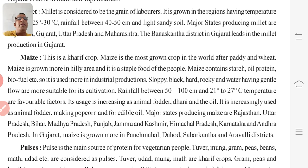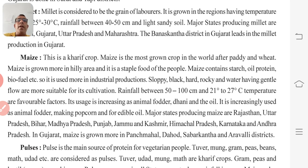Major states producing maize are Rajasthan, Uttar Pradesh, Bihar, Madhya Pradesh, Punjab, Jammu and Kashmir, Himachal Pradesh, Karnataka, and Andhra Pradesh. In Gujarat, maize is grown more in Panchamahal, Dahod, Sabarkatha, and Urbale district, as these are hilly areas.